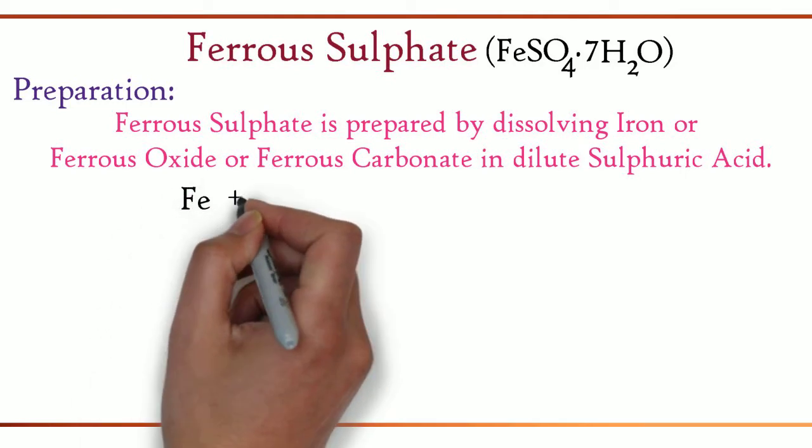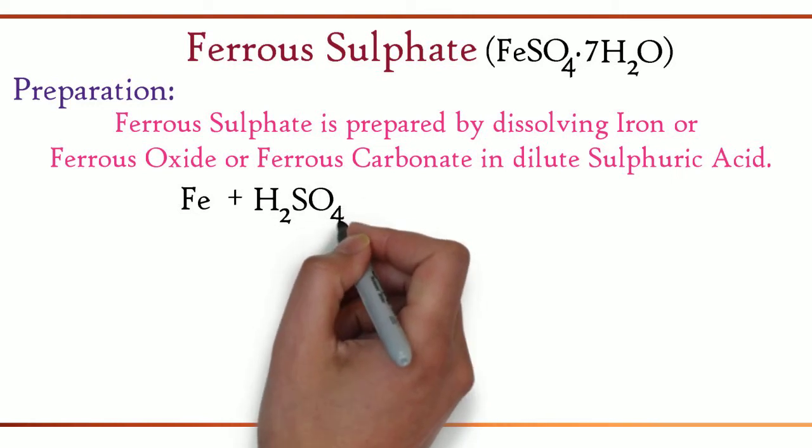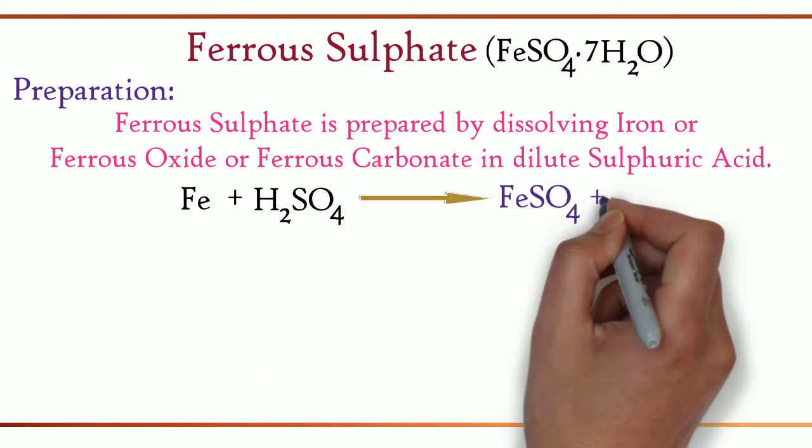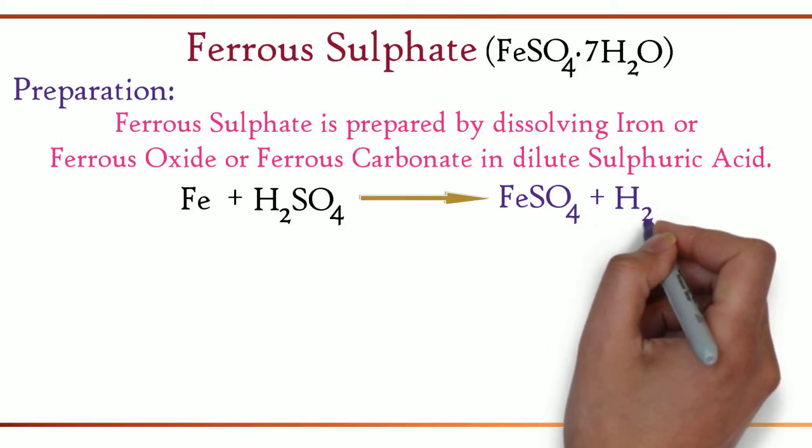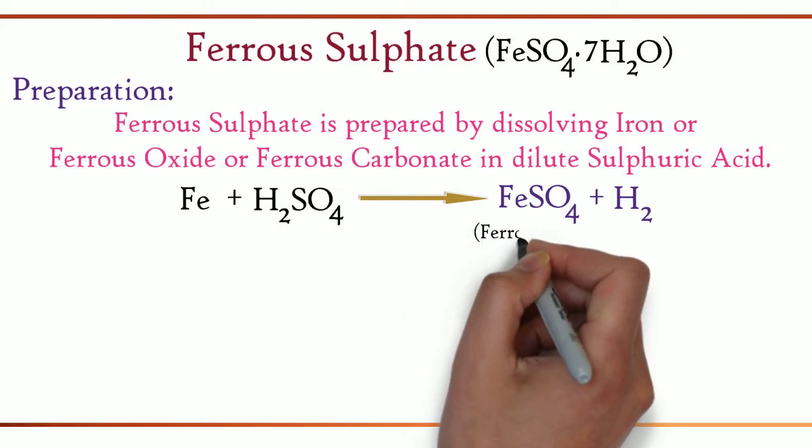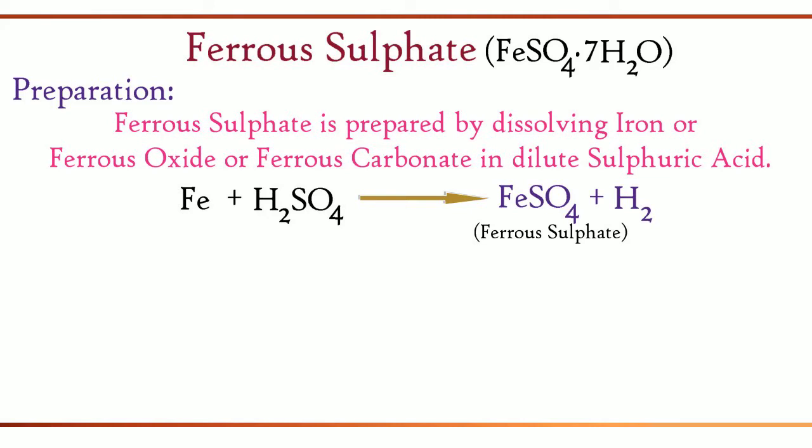The equations are as follows. Fe + H2SO4 gives FeSO4 + H2. When iron reacts with dilute sulfuric acid, it results in the production of ferrous sulfate and hydrogen gas.